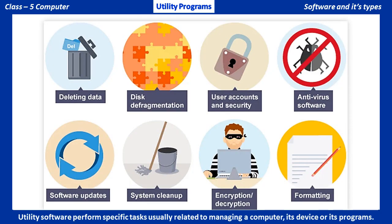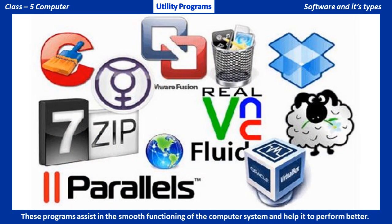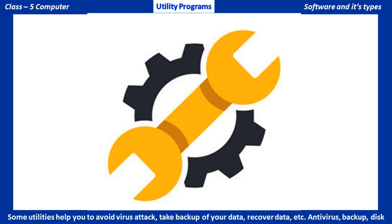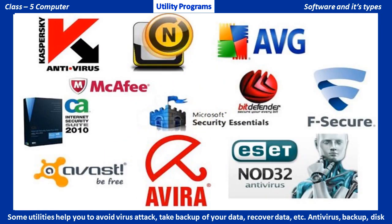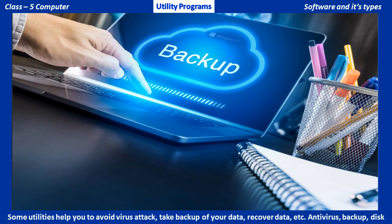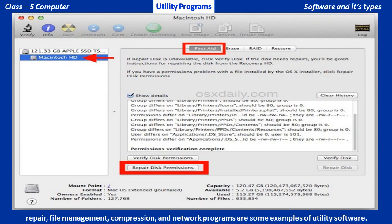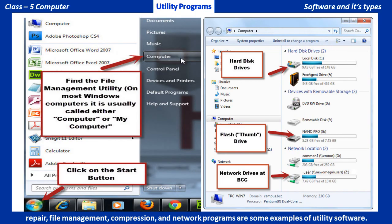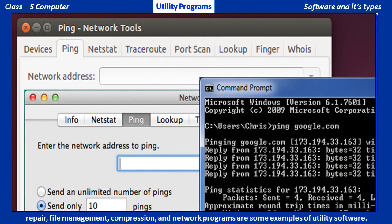Utility software performs specific tasks usually related to managing a computer, its devices, or its programs. These programs assist in the smooth functioning of the computer system and help it to perform better. Some utilities help you to avoid virus attack, take backup of your data, recover data, etc. Antivirus, Backup, Disk Repair, File Management, Compression, and Network Programs are some examples of utility software.